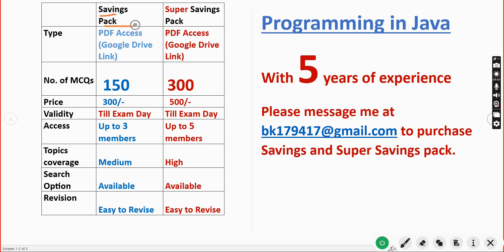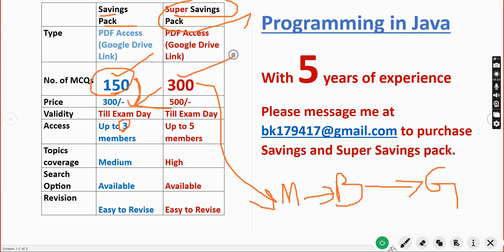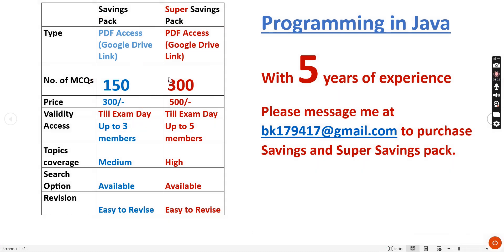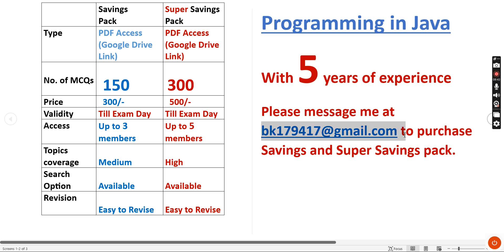The savings pack includes 150 MCQs for 300 rupees, accessible to up to three members. Comparing the two, the super savings pack is much better — more MCQs means better practice and higher chances of a better grade. My recommendation is the super savings pack. The email ID for purchasing is given in the description and comment section.